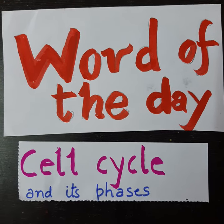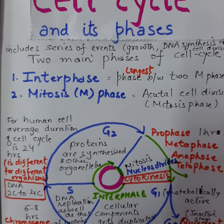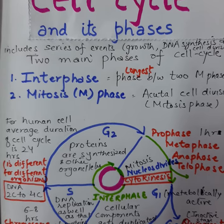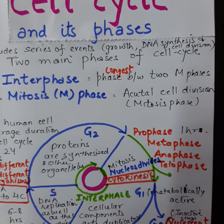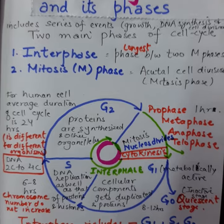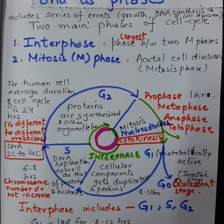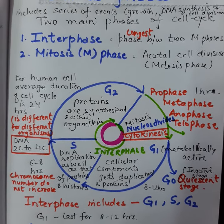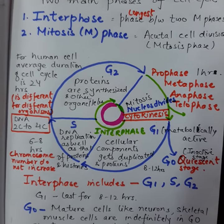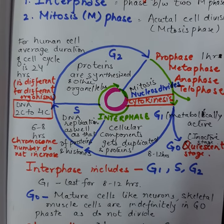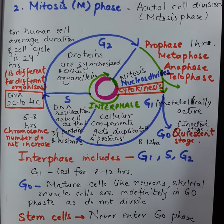Let's learn about the cell cycle. The cell cycle includes a series of events like growth, DNA synthesis, and cell division. It is divided into two main phases: interphase, which is the longest phase, and mitosis phase, which is the actual cell division. The cell cycle in a human cell is about 24 hours.